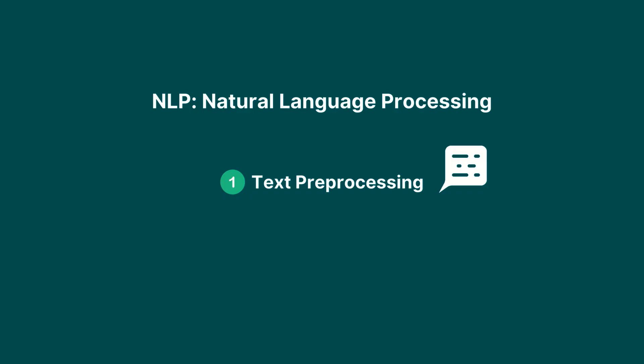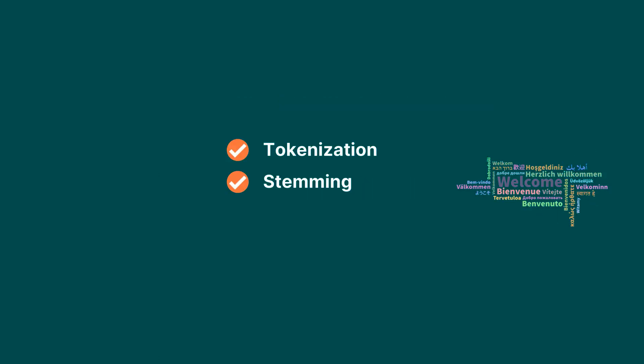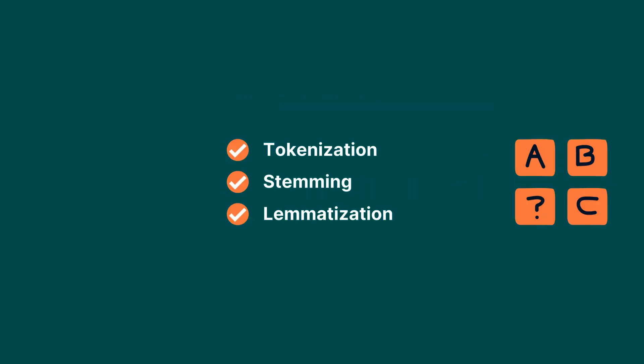Number one is text preprocessing. This includes techniques like tokenization, stemming, and lemmatization, which are used to clean and prepare text data for analysis.